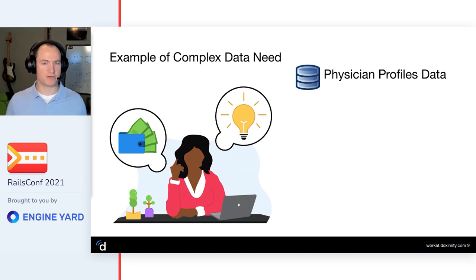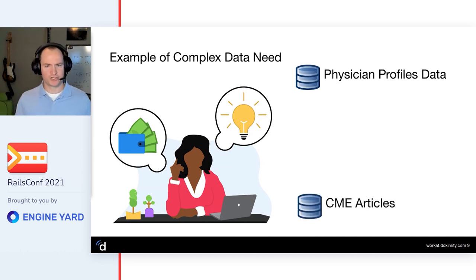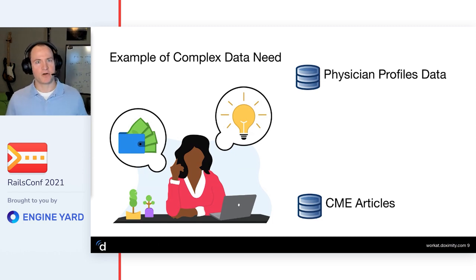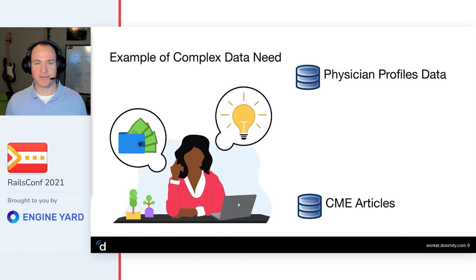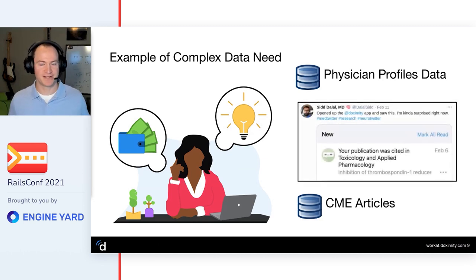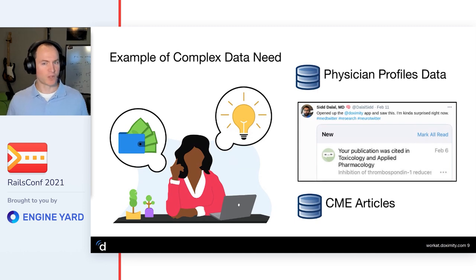Let's look at a real example of a complex data need. We have a lot of physician profile data - first name, last name, where they went to university, their specialty, subspecialty. We also have Continuing Medical Education where we ingest articles and can extract things like who has been cited in other articles. Business gets the idea: how empowering would it be for physicians to see that when they created a white paper or journal entry, somebody else cited their work? We released this and physicians like it - it's empowering, it allows them to feel better about writing articles and write more.